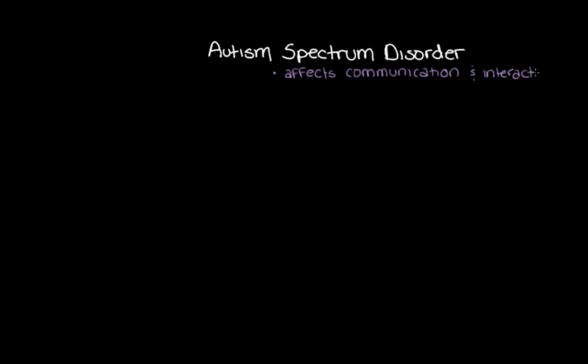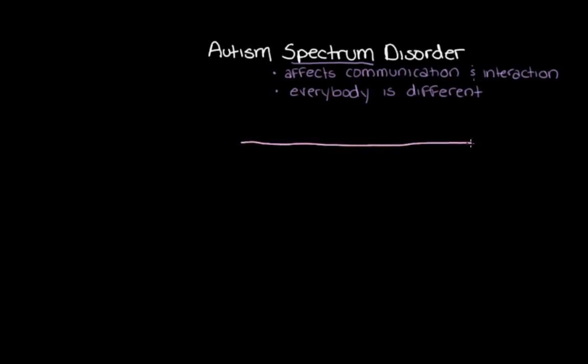Autism spectrum disorder is a really broad social disorder that affects the way that someone communicates and interacts with other people. The reason we call it a spectrum disorder is because each person with autism spectrum disorder is affected a little differently. No two people with autism spectrum disorder are exactly the same, so different people fall along a spectrum with different symptoms, different challenges, and different abilities that vary a lot in severity.